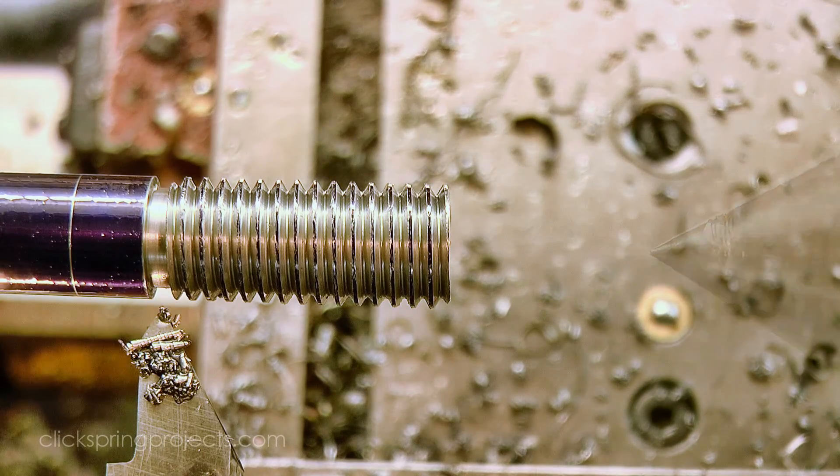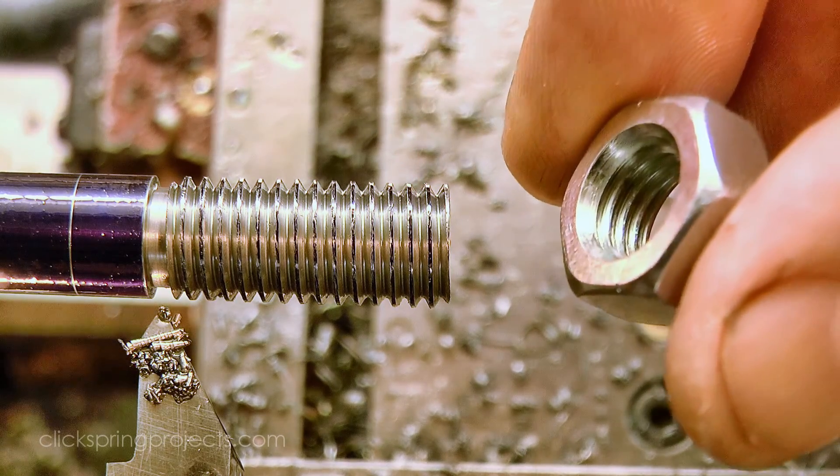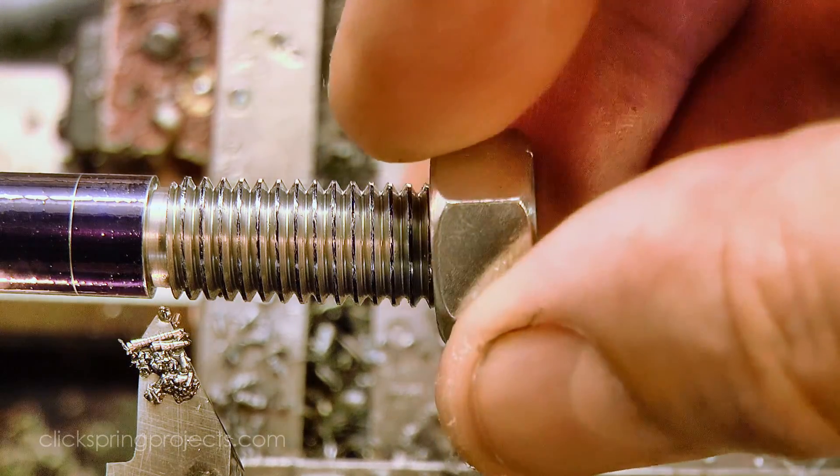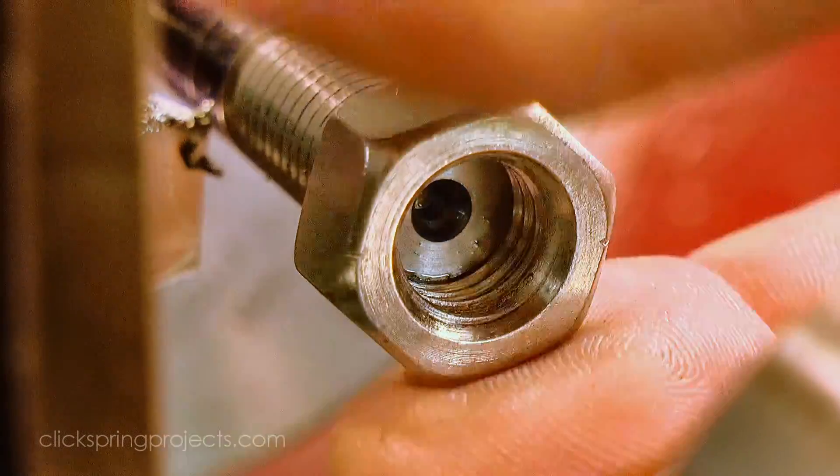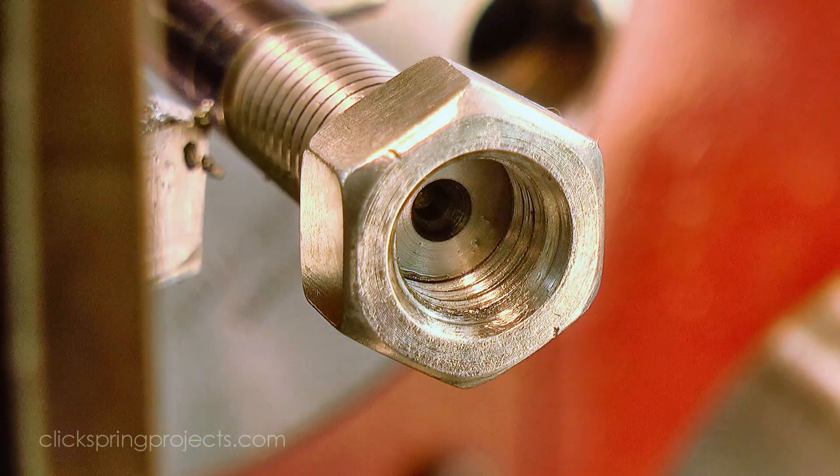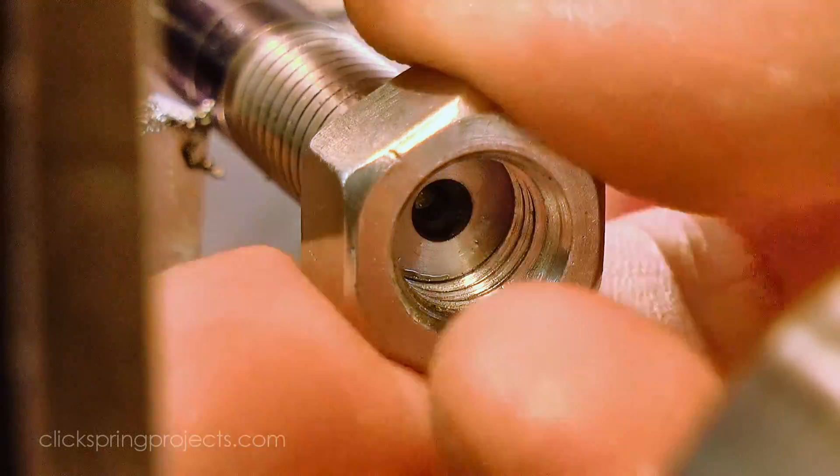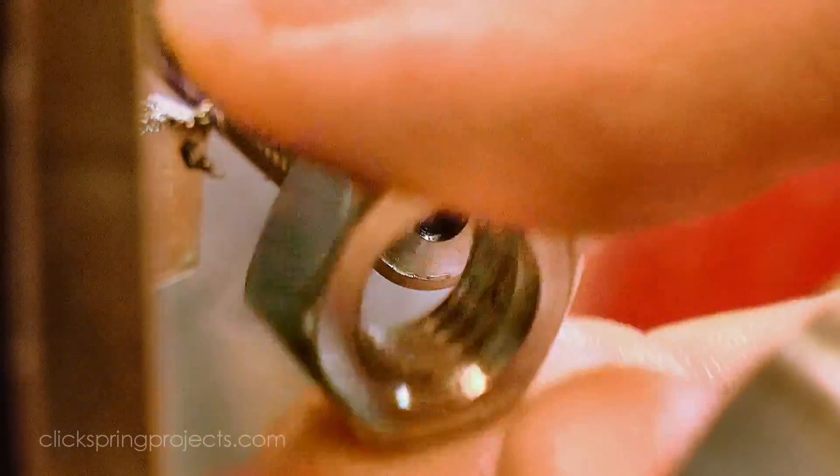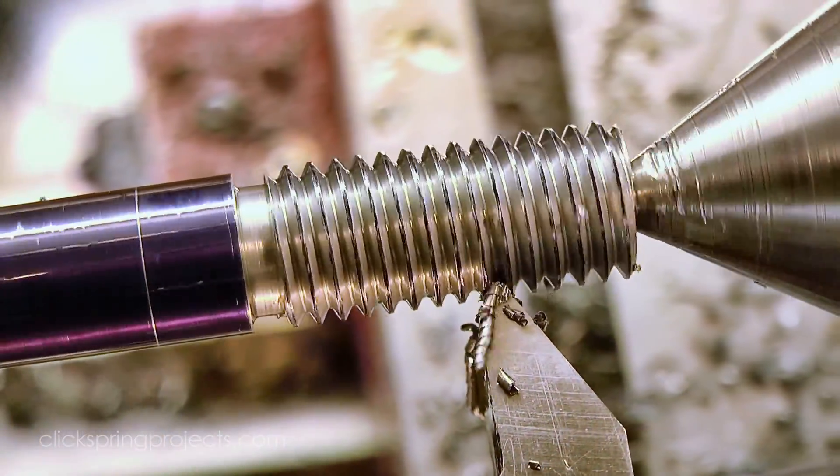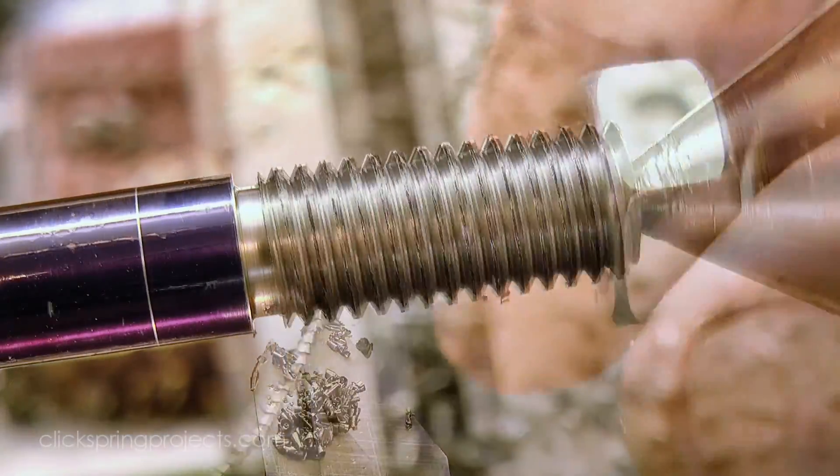I'm using this nut as a simple gauge to judge my progress. I know it to be a loose fit on a standard thread, so if it passes on, I know I'm close to the correct minor diameter. In this case it'll start, but it won't continue onto the thread, so I'm still short of the full depth. A few more light passes though, and it goes on beautifully.